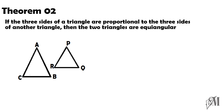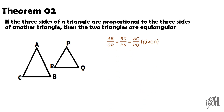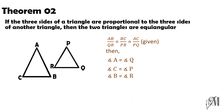Previously, if the triangles are equiangular then the sides are proportional. Here, if the sides are proportional, then the two triangles are equiangular. From the diagram, it is given that the sides are proportional, so we can say angle A equals angle Q, angle C equals angle P, and angle B equals angle R. Therefore the two triangles are equiangular.